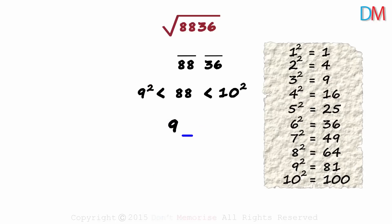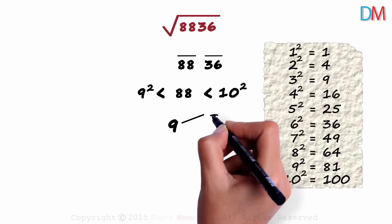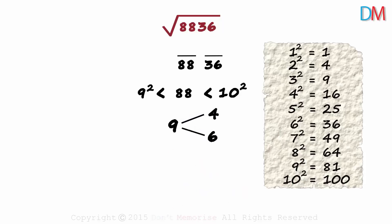How do we get the units digit? The units digit of the number 8836 is 6. It implies that there are two possibilities for the units digit. It can either be 4 or 6, because both 4 times 4 and 6 times 6 will give us the units digit as 6. But which one will it be?